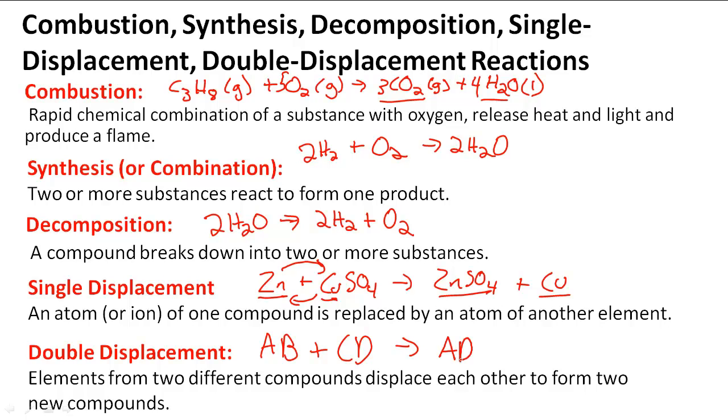This is now going to yield AD plus CB. So now that we see that we have AD plus CB, this tells me now that I have A replacing this C, and the C is replacing the A here, and so this is why you see CB together and AD together. That is a double displacement reaction. So if you see something that is in that form, you know you're looking at a double displacement reaction.